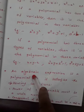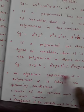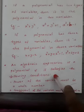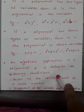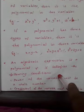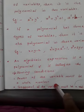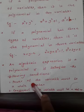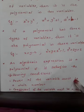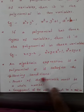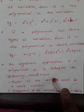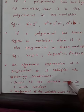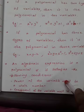An algebraic expression is a polynomial if it satisfies the following conditions. If an algebraic expression satisfies these two conditions, then only it is a polynomial. The first condition is: the power of the variable must be a whole number. Power of the variable cannot be negative or a fraction — it should be a whole number.